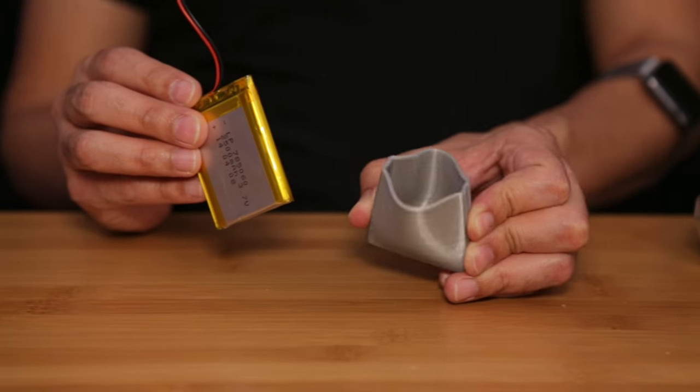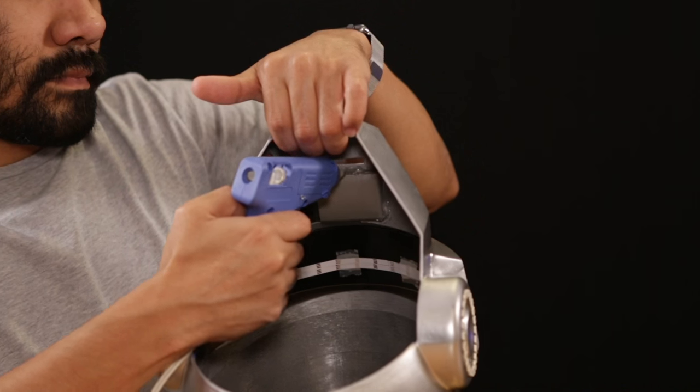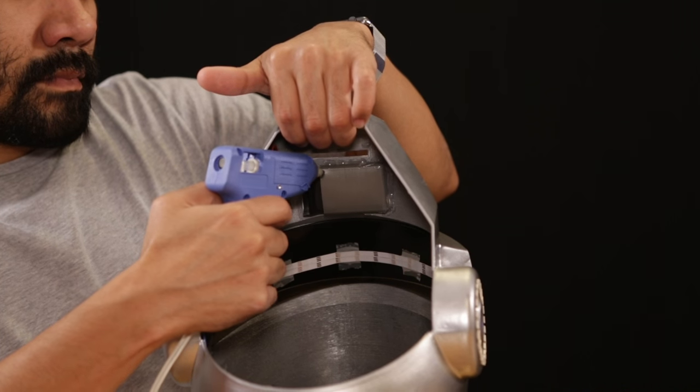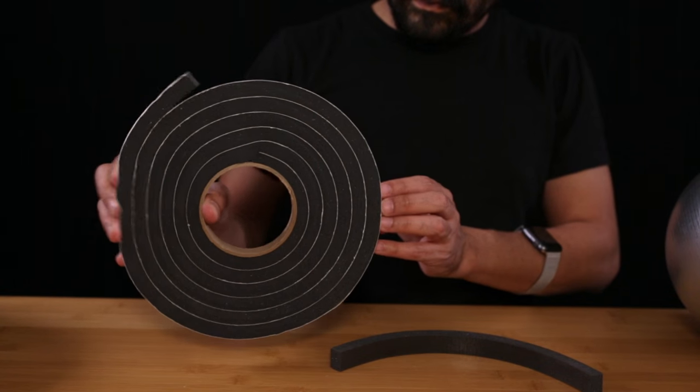We can mount the battery to the helmet using a lipo pocket that's printed in NinjaFlex. Use hot glue to attach the NinjaFlex pockets to the inside of the helmet. Now to make it more comfortable for wearing we can add strips of insulated foam.